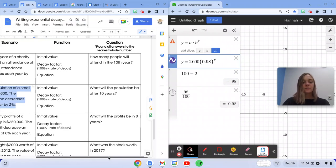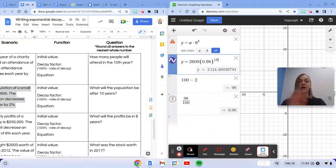What will the population be after 10 years? So once again, I'm going to take out x and put in 10 because they're telling me that x is 10. And if I'm rounding to the nearest whole number, this is 2,124 people.